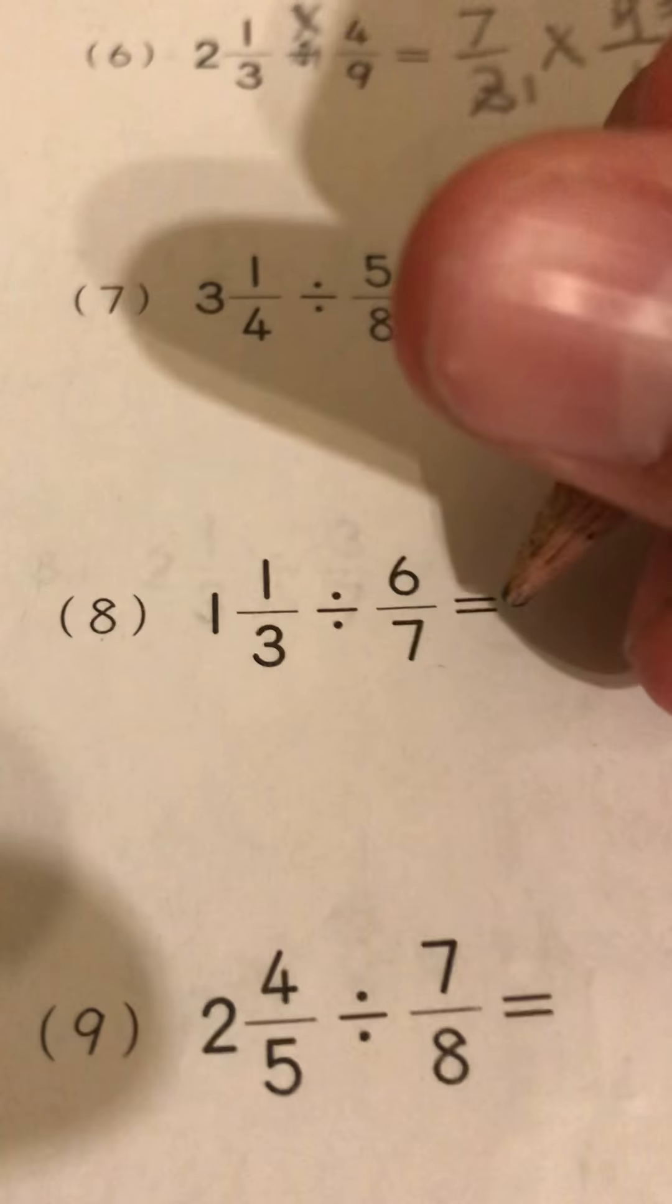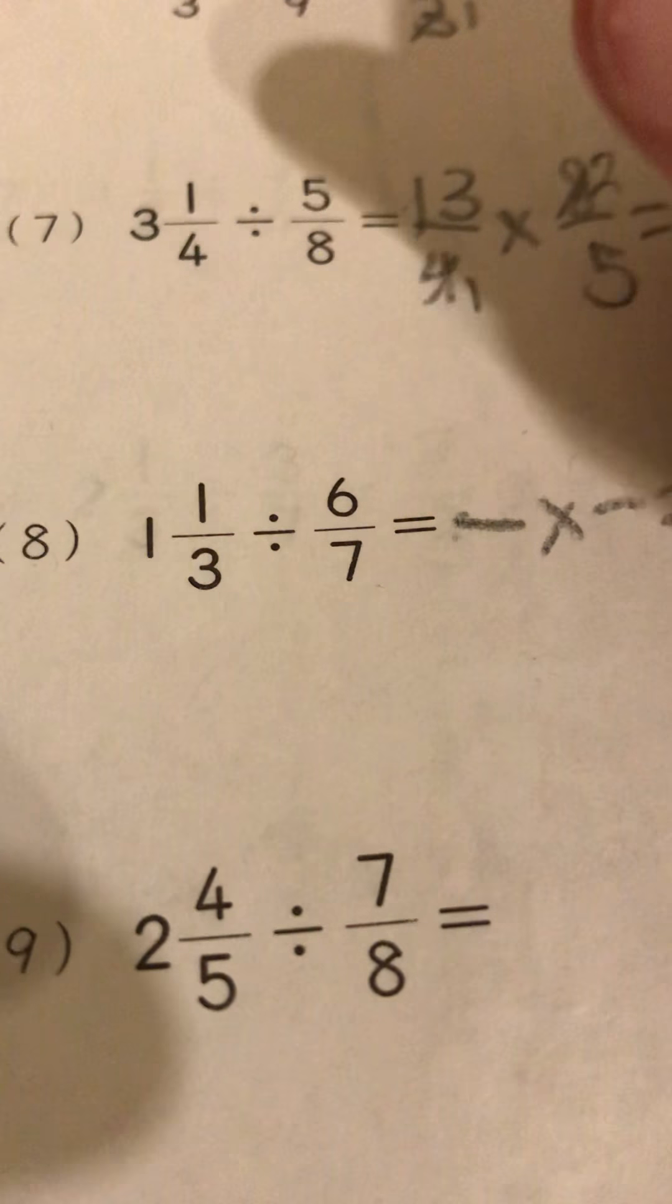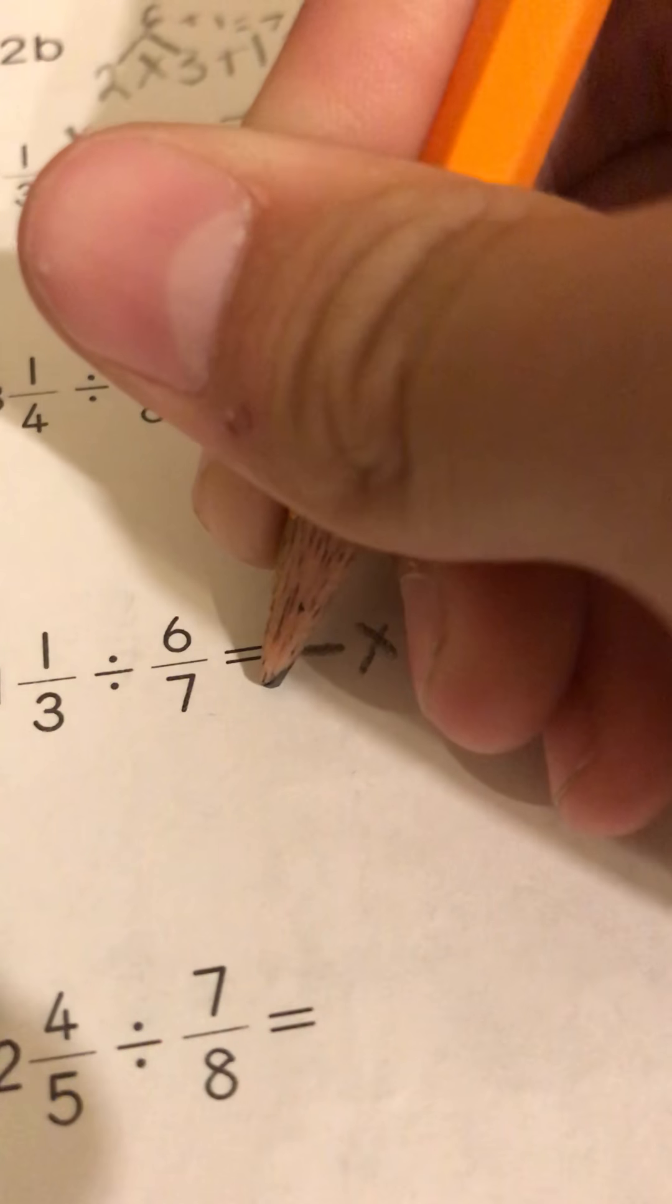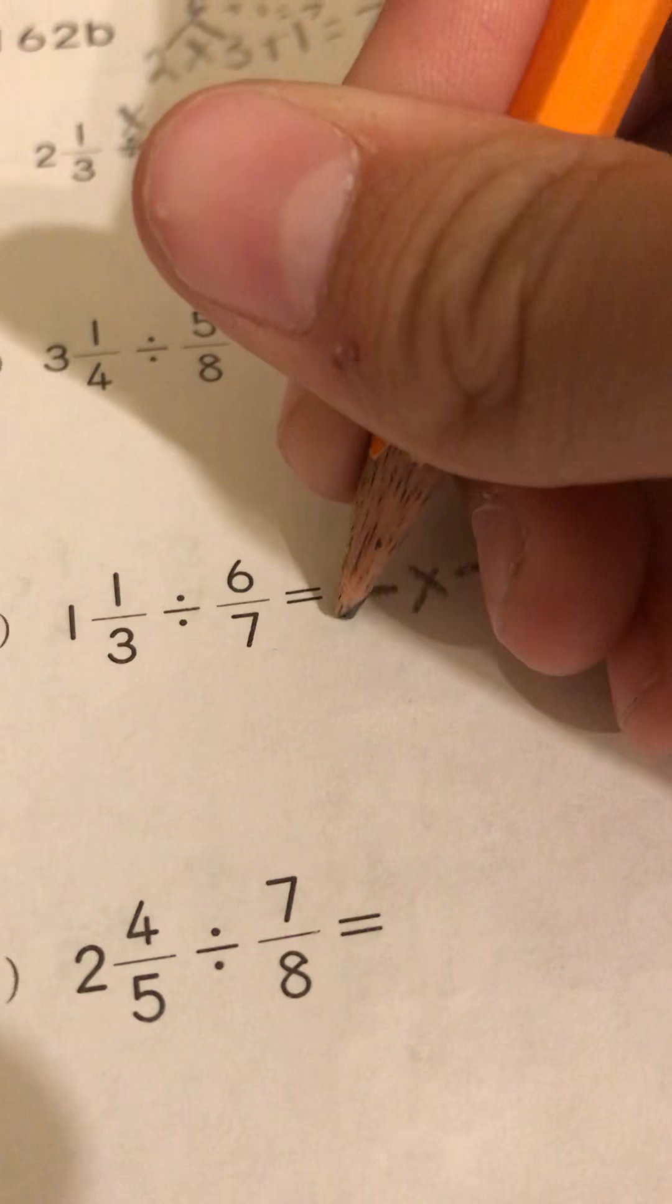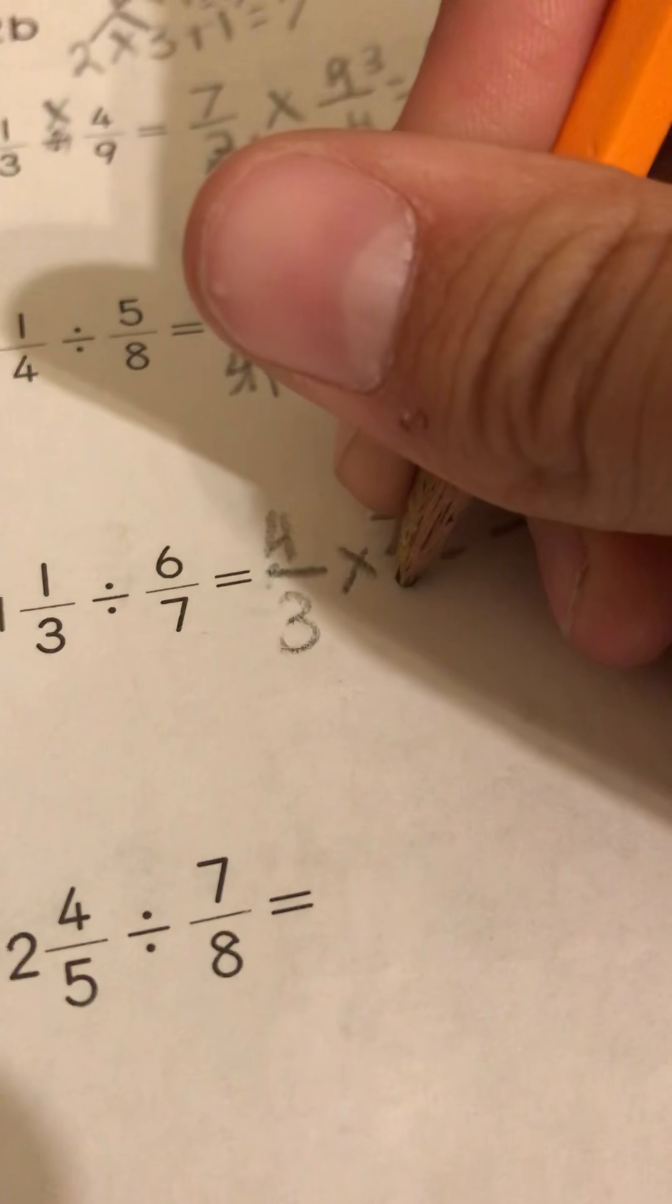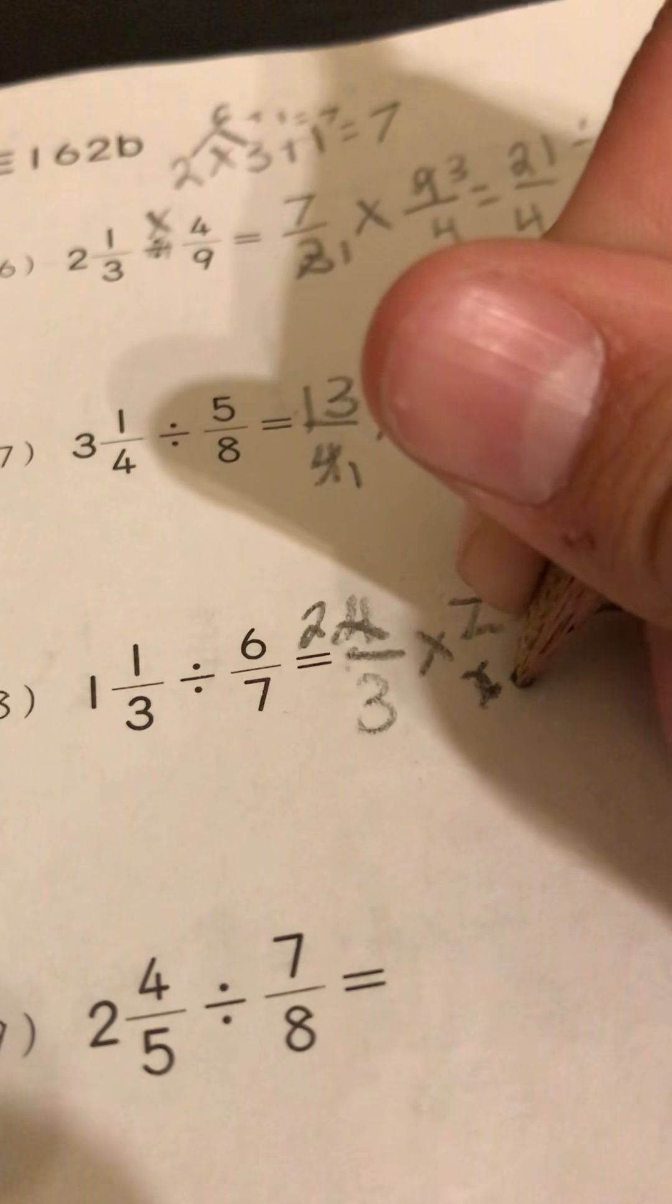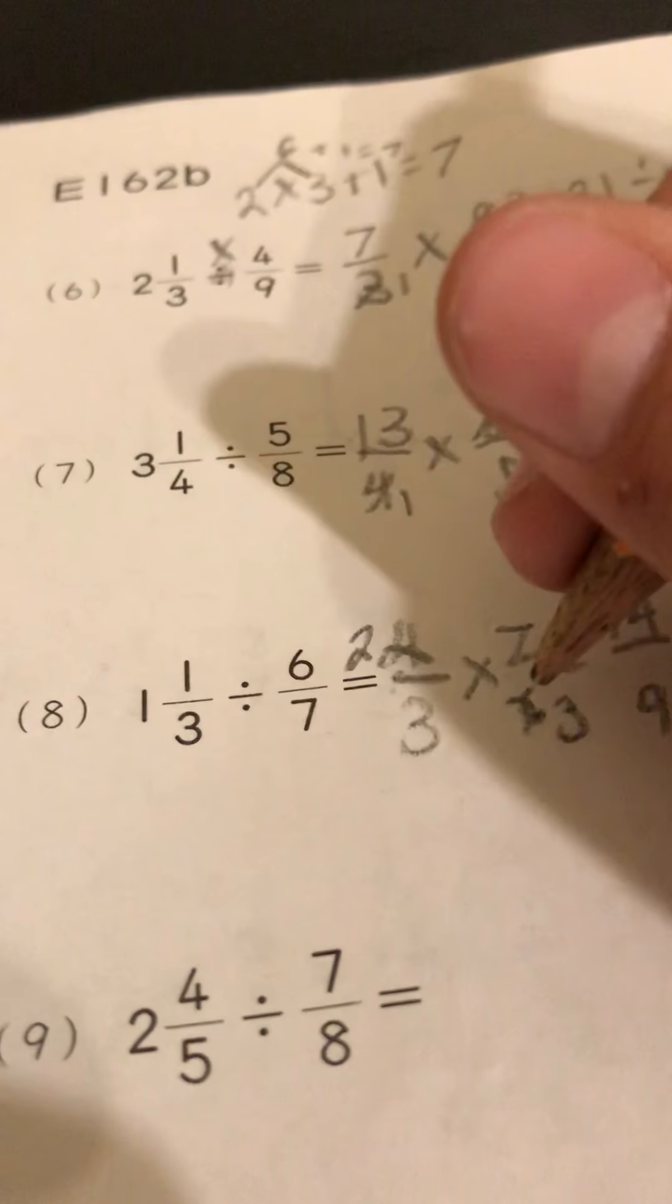I'll do one more. So anyway, we have four over three times seven over six. This can be reduced to two, this can be reduced to three, so you have nine over fourteen when you multiply the two.